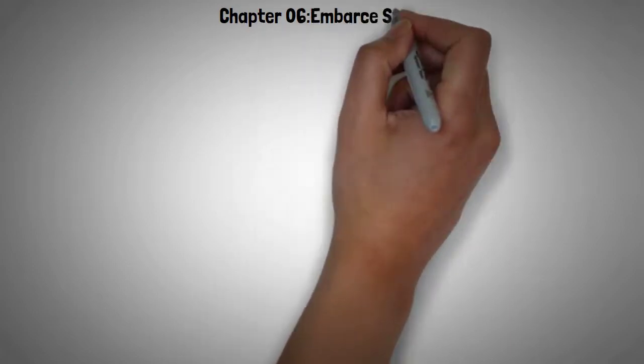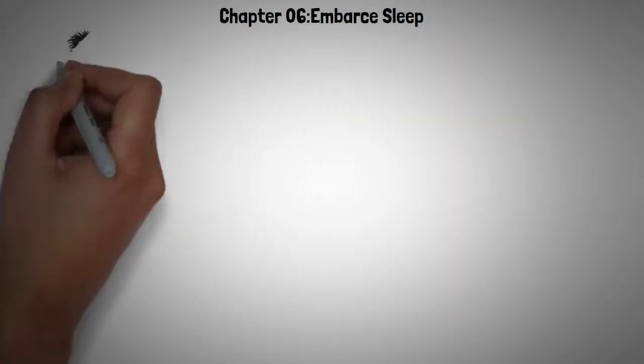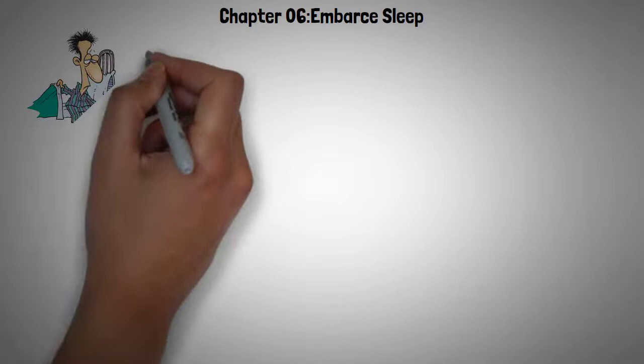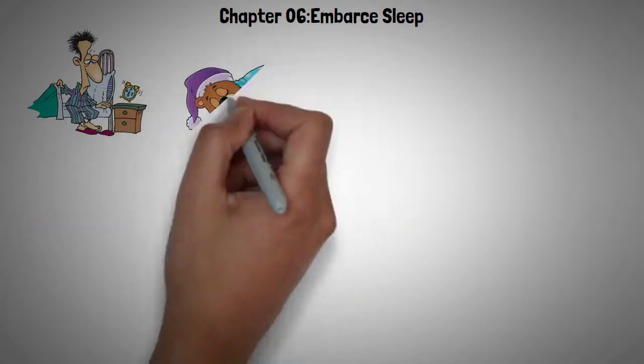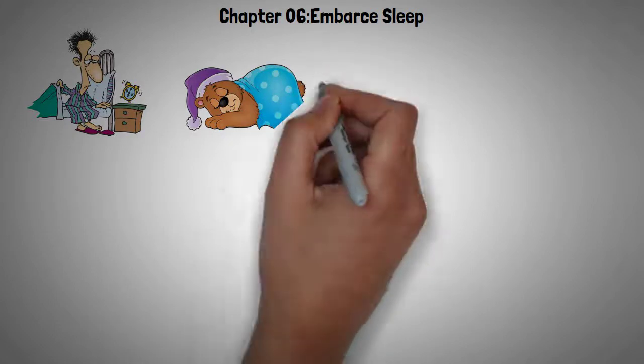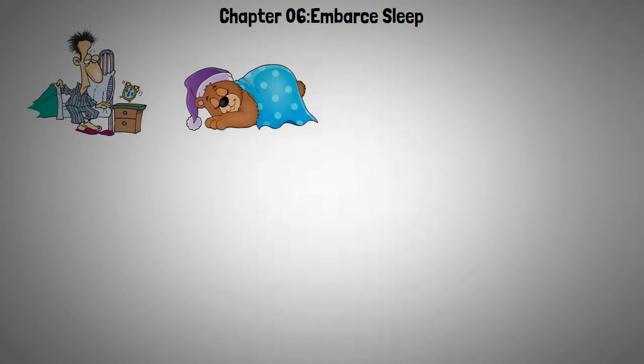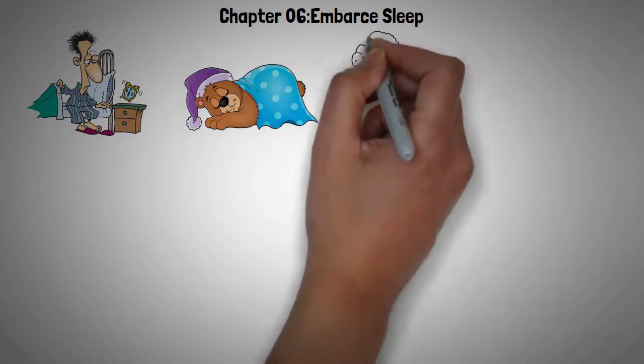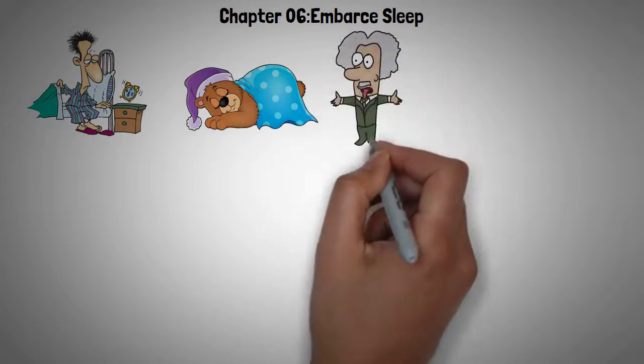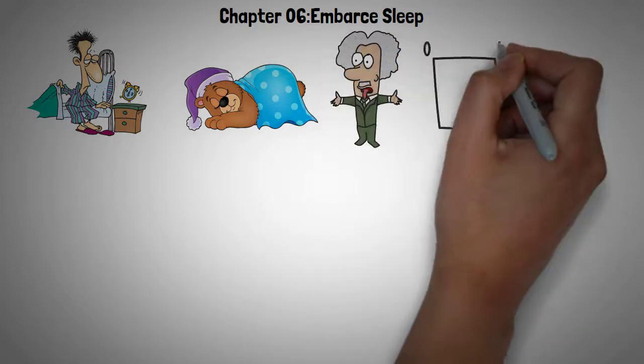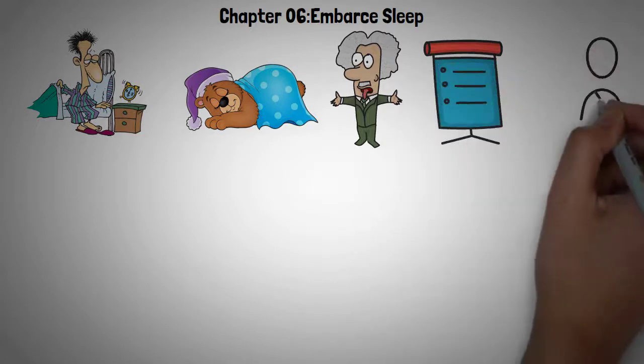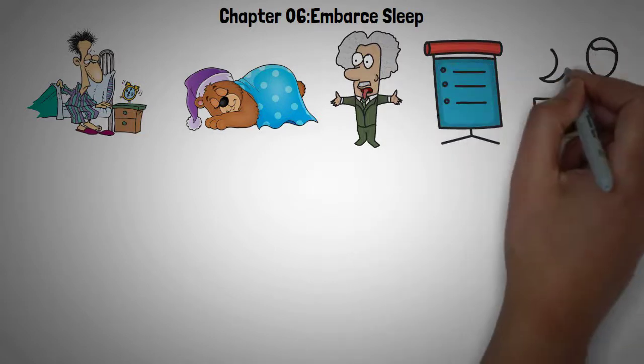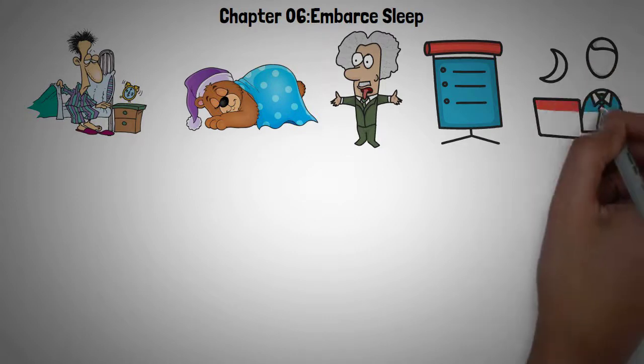Chapter 6: Embrace Sleep. A system which asks you to get up at 5 AM probably doesn't sound like one which prioritizes sleep. But in fact, a good night's sleep is integral to achieving life-changing results with the 5 AM Club. Because, as the billionaire explains to his new protégés, research has shown that sleep is one of the key factors at play when it comes to predicting life expectancy. And how you spend the last hour of your day is every bit as crucial as the way you spend your first.